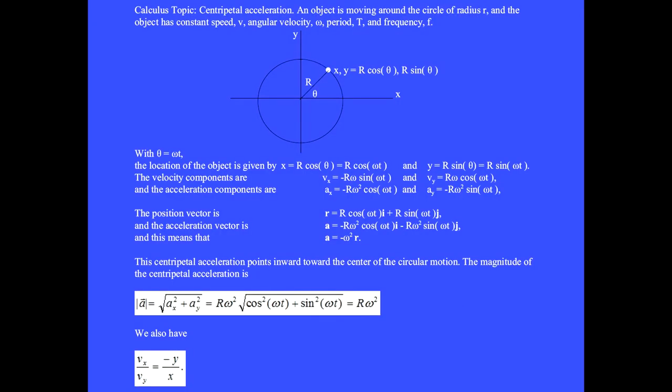An object is moving around the circle of radius r and the object has constant speed v, angular velocity omega, and period t.